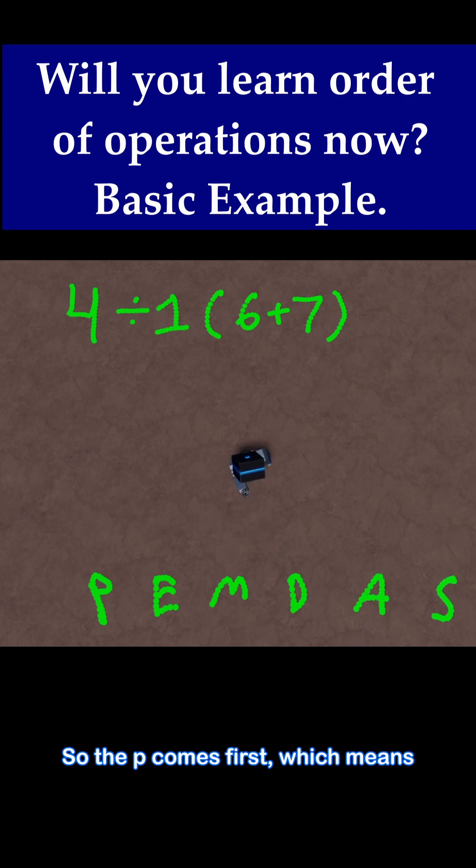So the P comes first, which means things in parentheses are going to be done first. So in parentheses, we have 6 plus 7. So that happens first. 6 plus 7 is just 13. And then so we're done with that.